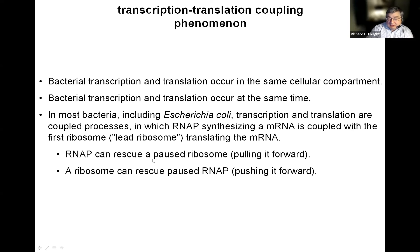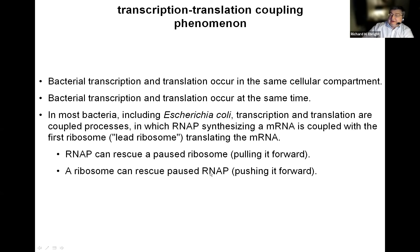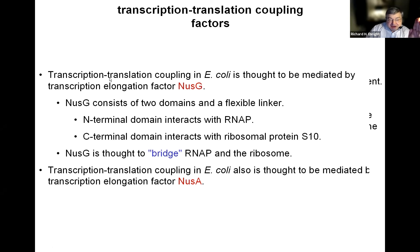As a result of this coupling, an RNA polymerase molecule can rescue a paused ribosome by pulling it forward, and a ribosome can rescue a paused RNA polymerase molecule by pushing it forward. This transcription-translation coupling in E. coli is thought to be mediated by the transcription elongation factor NusG, which comprises two domains and a linker. The N-terminal domain is thought to interact with RNA polymerase, the C-terminal domain is thought to interact with ribosomal protein S10 in the ribosome, and the intact factor bridges RNA polymerase and ribosome.